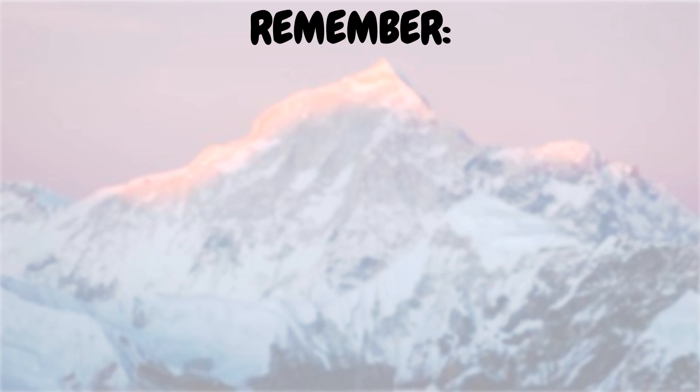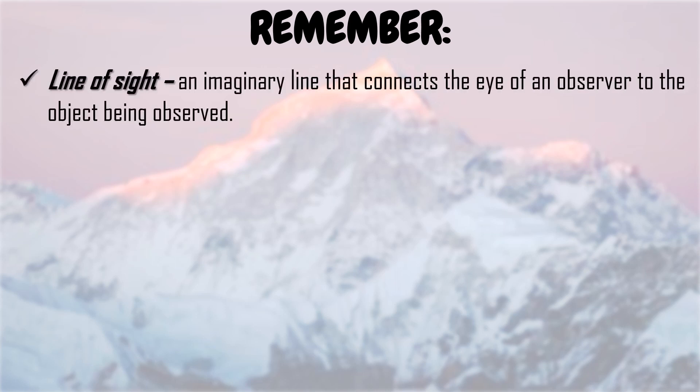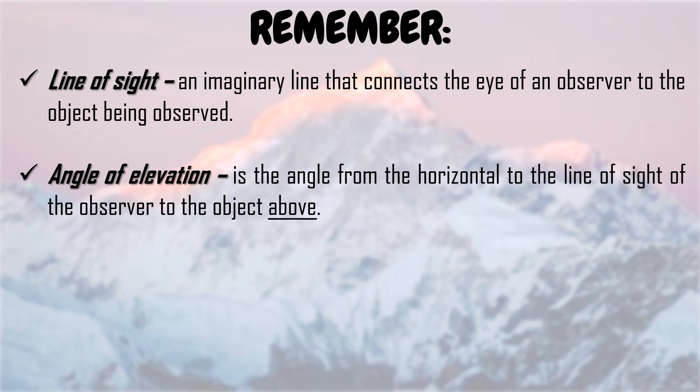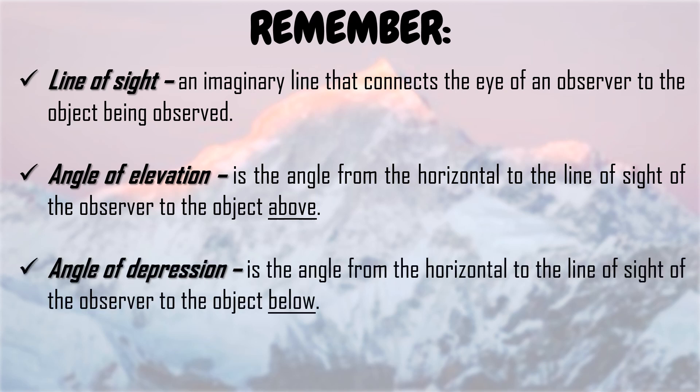Let us now summarize what we have learned about this lesson. Line of sight is an imaginary line that connects the eye of an observer to the object being observed. Angle of elevation is the angle from the horizontal to the line of sight of the observer to the object above. Angle of depression is the angle from the horizontal to the line of sight of the observer to the object below.